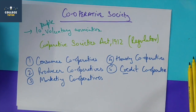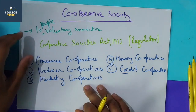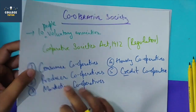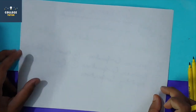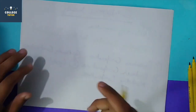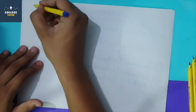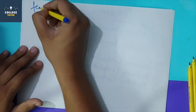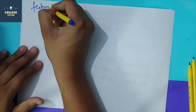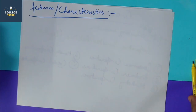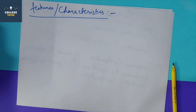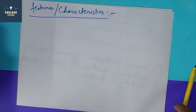So those were the types. After that, the next main topic is the features of cooperative society - features and characteristics are both the same thing. Let's discuss them. First of all, as I mentioned in the definition and meaning, the most important feature is voluntary association.